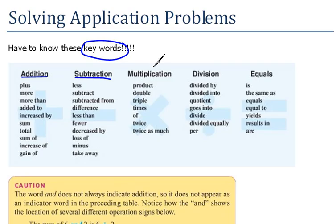We also have a list for multiplication. Things like product. If we say double, that means two times something. Triple would be three times something. The nice word that we use a lot is of. Anytime we talk about, you know, half of something, that's a multiplication problem. So we need to know that anytime we see those words, that means multiplication.